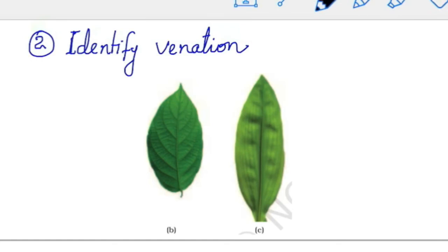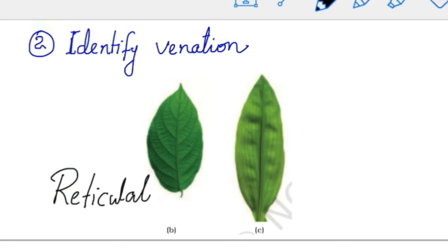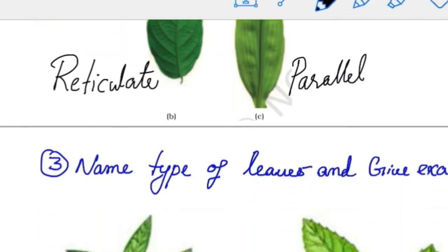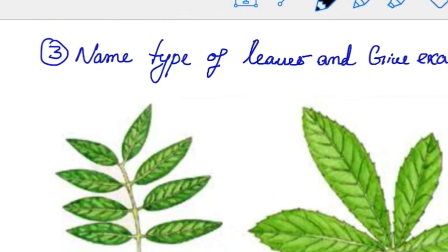Identifying venation: reticulate venation is mostly seen in dicot plants. Parallel venation is seen in monocot plants. There are two types of venation: reticulate venation and parallel venation.